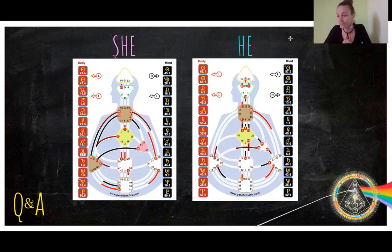I'm a manifestor and my husband is a projector. Here are our charts. I'm born from two projector parents and he's born from two manifestor parents, which is fascinating, right?